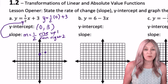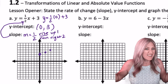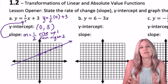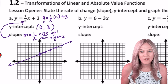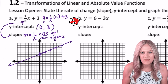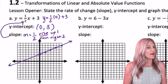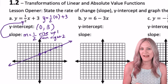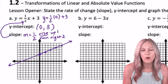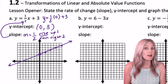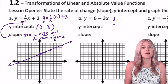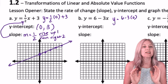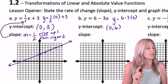We can continue plotting points indefinitely because a line goes on forever in both directions. What's the y-intercept on the next one? A y-intercept is that point on the y-axis, so x is zero. We plug zero into the equation and we get y is six, so the y-intercept is zero comma six.